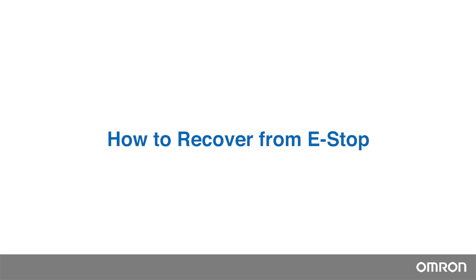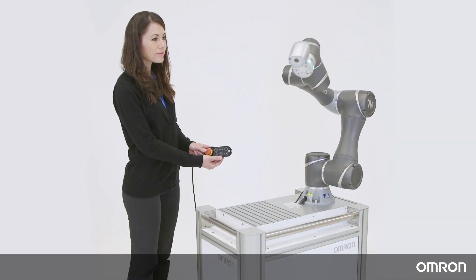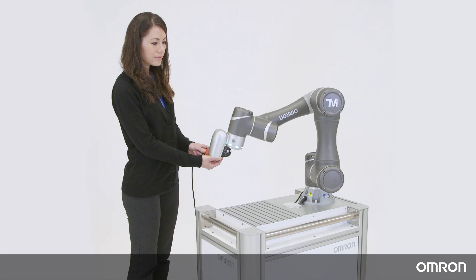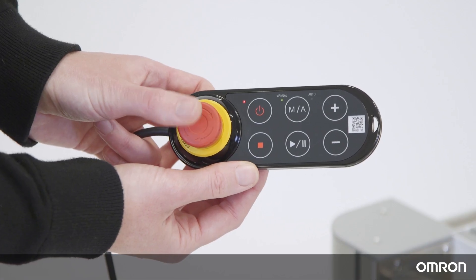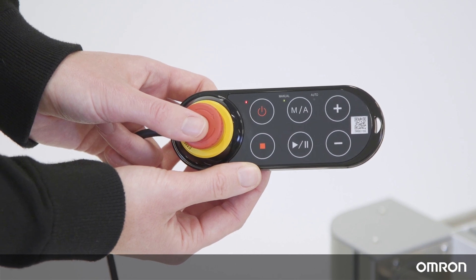To stop the cobot in an emergency situation, you will have to hit the e-stop. By pressing the e-stop, the power to the cobot will be shut off after it comes to a complete stop.